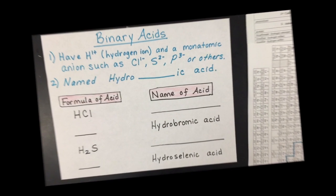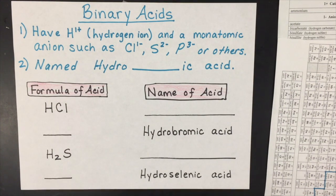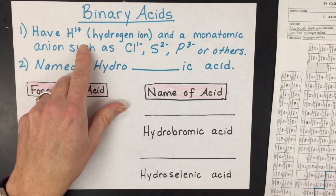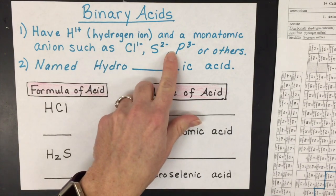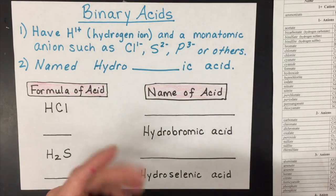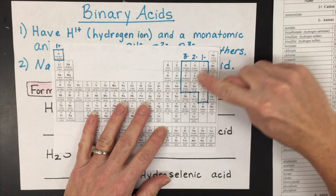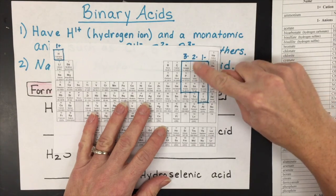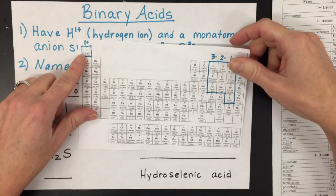I'm going to go through how to name binary acids. First, you have to recognize the binary acid either by name or by formula. They have the hydrogen ion and a monatomic anion. The monatomic anions could be nitride, phosphide, arsenide, sulfide, selenide, oxide, fluoride, chloride, bromide, or iodide, and they will bond with the hydrogen ion.